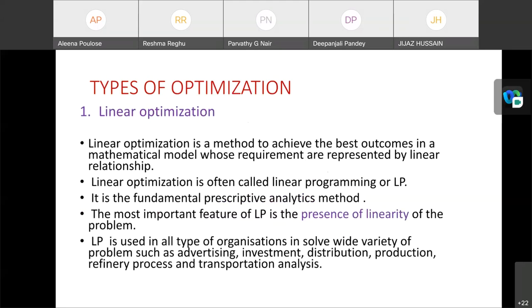Then types of optimization. There are mainly two types of optimization. First one is linear optimization and second one is non-linear optimization. The linear optimization method is a method to achieve the best outcomes in a mathematical model whose requirements are represented by linear relationships. Linear optimization is often called linear programming or LP. It's a fundamental prescriptive analytics method. The most important feature of LP is the presence of linearity of the problem. It is used in all type of organizations such as advertising, investment, distribution, production, refinery process and transportation analysis.